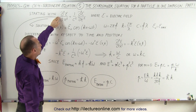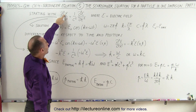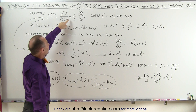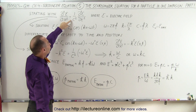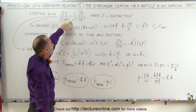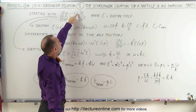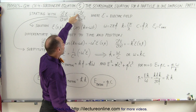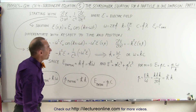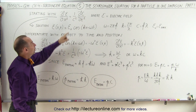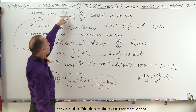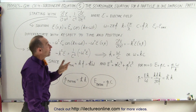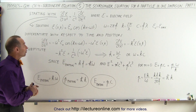The partial second derivative of the electric field with respect to position is equal to 1 over the speed of light squared times the second partial derivative of the electric field with respect to time. Remember, the squiggle E here refers to the electric field.